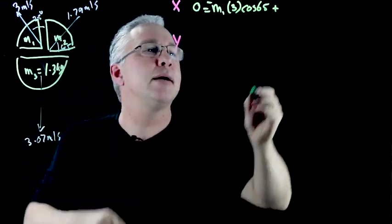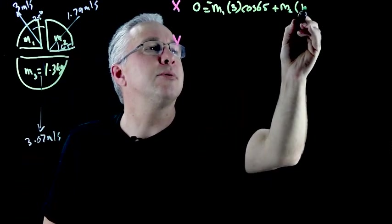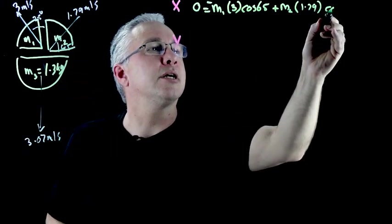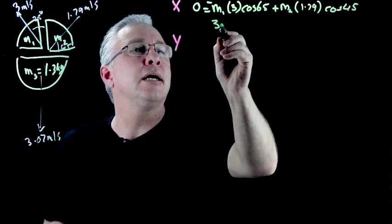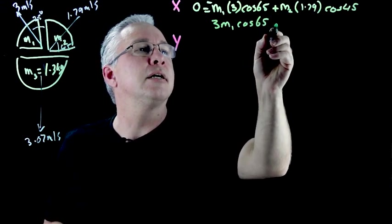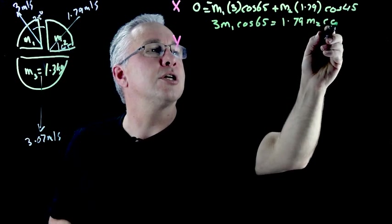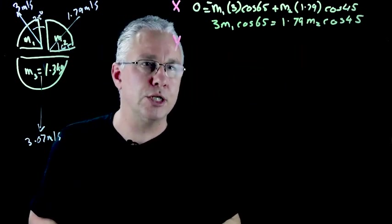And then of course I'll do the same thing for m2 so I have m2 multiplied by its velocity which is 1.79 and then of course I multiplied by its component which is cosine 45. So what we end up is getting 3 m1 cosine 65 is equal to 1.79 m2 cosine 45. So that's the first equation.